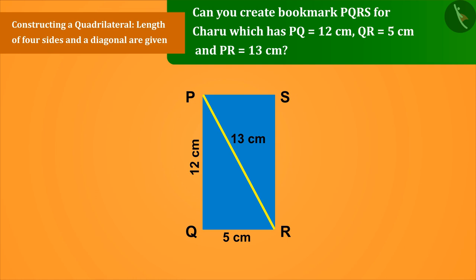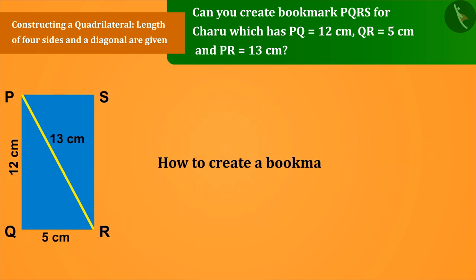As we have known in the previous video, the value of five measurements is required to construct a quadrilateral, but in this we only have the value of three measurements. Now the question is how to create a bookmark.